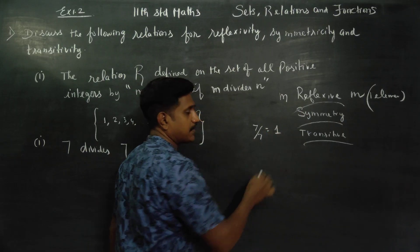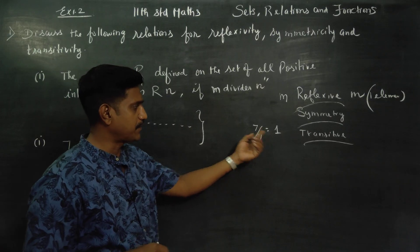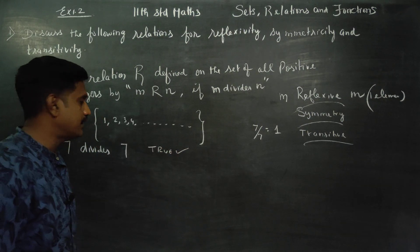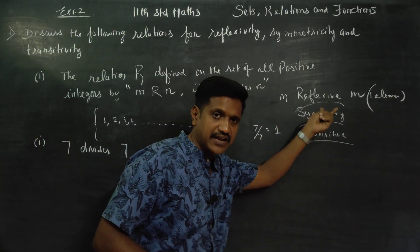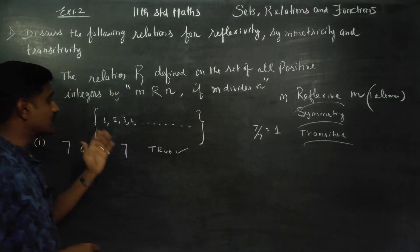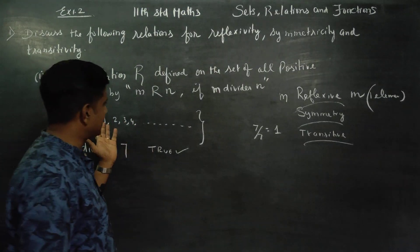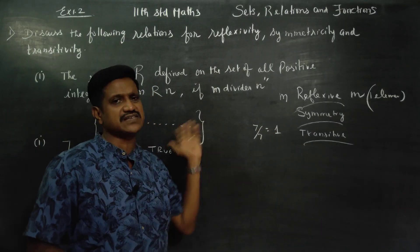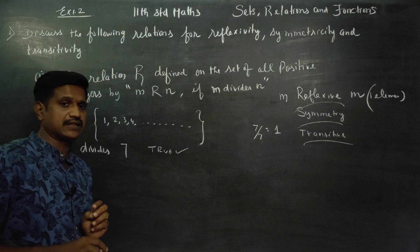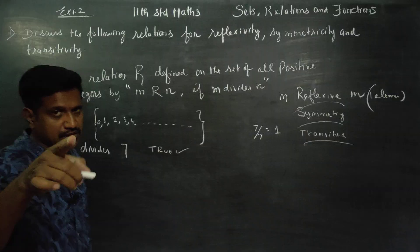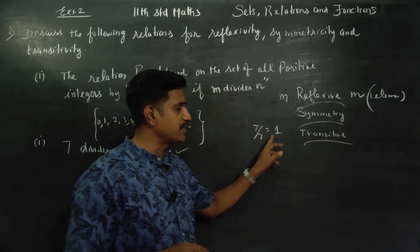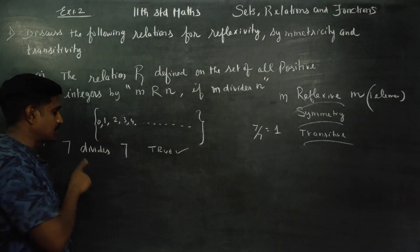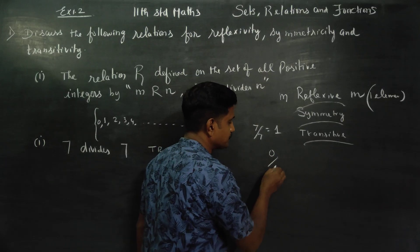For example, seven divided by seven — the remainder is zero, so seven divides seven is true. This is true. So what does it mean?